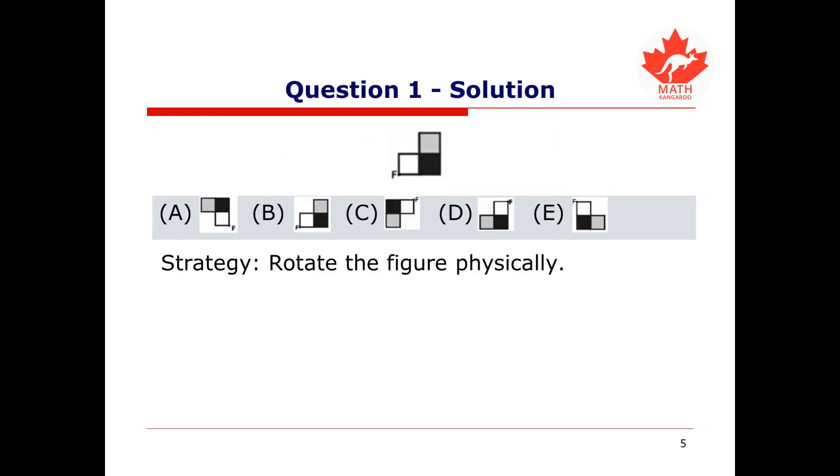Here we can solve the problem by physically rotating the figure. In a contest scenario, this figure will be ready for you on the contest booklet, so you can spin that around to get the answer. Here is a copy of the figure from the question. The question is set to rotate it by half a turn around point F. So let's do that. Watch this. We can then compare this result to the answers we're given. And the only match is option C, which is our final answer.